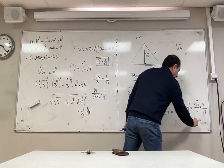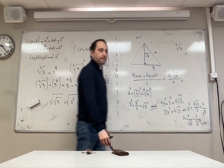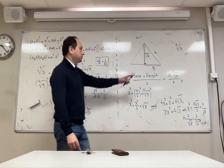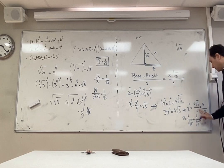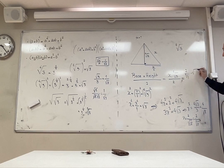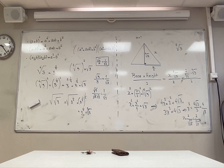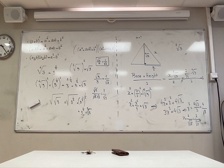Putting it together: x is 2 divided by the fourth root of 3. The area is base times height divided by two: x times the fourth root of 3, divided by 2. Substituting x: 2 over fourth root of 3, times the fourth root of 3, divided by 2. The fourth root of 3 terms cancel, giving 2 divided by 2, which equals 1. The area of this triangle is exactly 1.